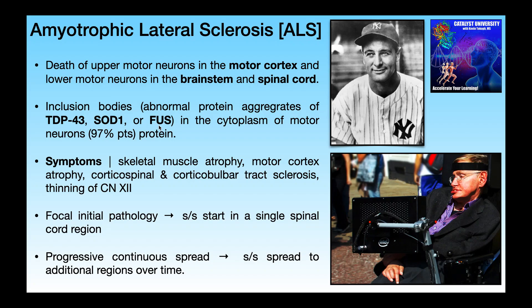This genetic mutation could be passed on from parent to offspring — that's about 5 to 10 percent of cases. Or in the remainder, it could be caused by some trigger in the environment that induces a mutation in these genes, and then you end up with the same problem. What those environmental triggers are exactly is unknown. However, what is known is that these gene mutations can cause misfolded proteins, which then cause aggregates called inclusion bodies. These inclusion bodies can accumulate in the cytoplasm of motor neurons, and that actually induces their death.